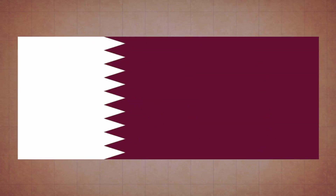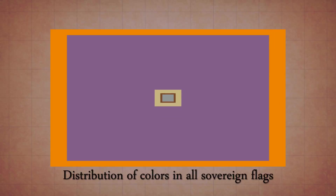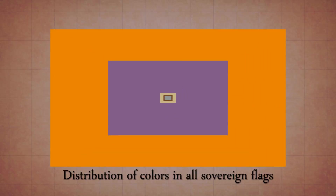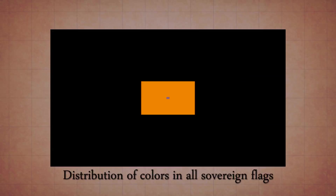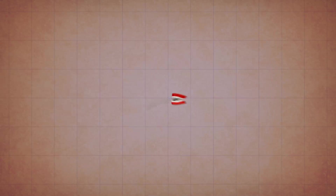We had some tricky cases along the way, like the flag of Qatar, where we needed to add the color purple for just that flag. So in the end, we were able to sort all colors in all 194 flags into a 12-color model that we felt represented the original flags.